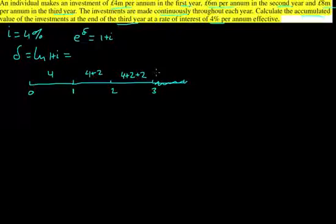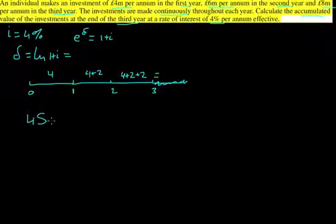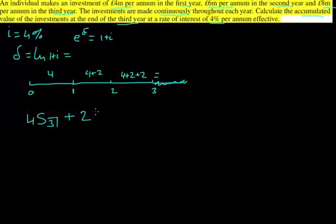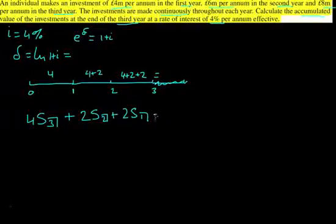And we just want to find out what all of this is going to equal. So to find that out, we're going to take 4 million as a series over 3 years, then we're going to be getting 2 million as a series over 2 years, and then also 2 million as a series over 1 year, which is equal to 2 million anyway. And whatever that equals will be our answer.